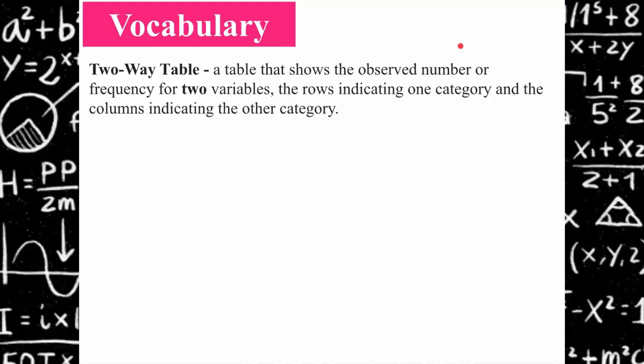It could be: are you male or female, and then you could give them five different ice cream flavors to pick from. Keeping in mind it's two different categories. Bivariate data is when you study two different variables, so sometimes a two-way table is referred to as a bivariate data table.